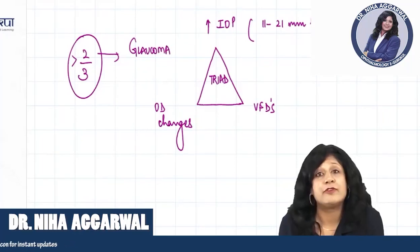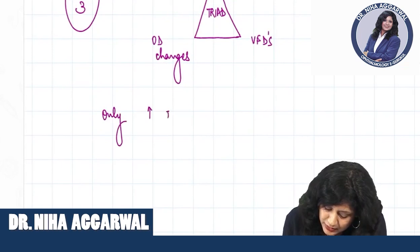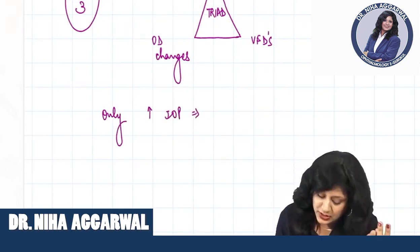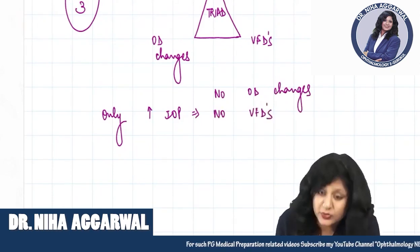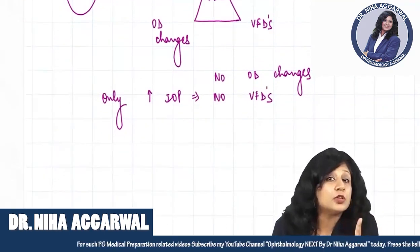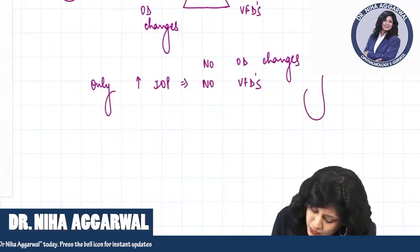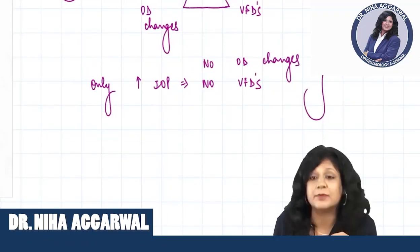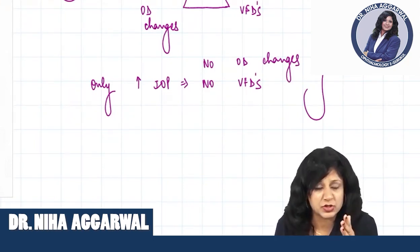That means if there is only raised intraocular pressure with no optic disc changes and no visual field defects, I will not call it glaucoma because only one criterion is present. This is called ocular hypertension. Ocular hypertension is nothing but the presence of raised intraocular pressure.